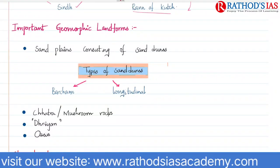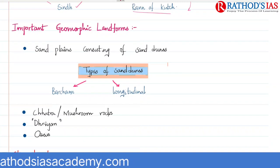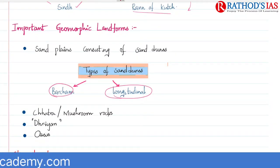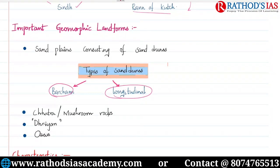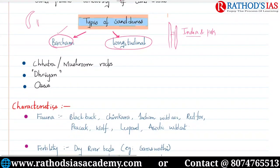The geomorphic landforms seen in the Thar desert include sand plains, which consist of sand dunes. We can especially see barchans and longitudinal sand dunes in this Thar desert. Barchans are crescent-shaped or half-crescent-shaped sand dunes found over very large areas. Longitudinal dunes are mostly found at the India-Pakistan border, while barchans are found throughout most of India's 85% share of the desert.